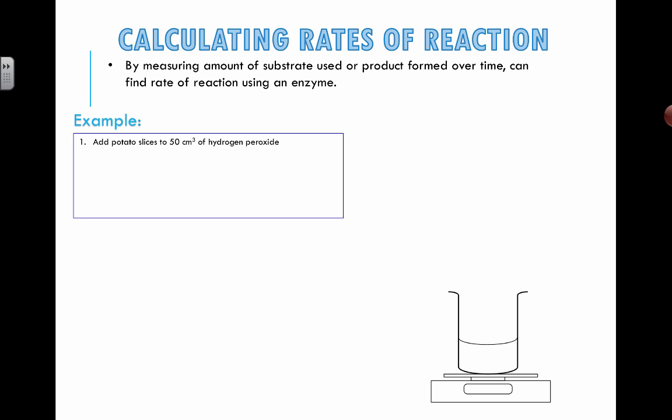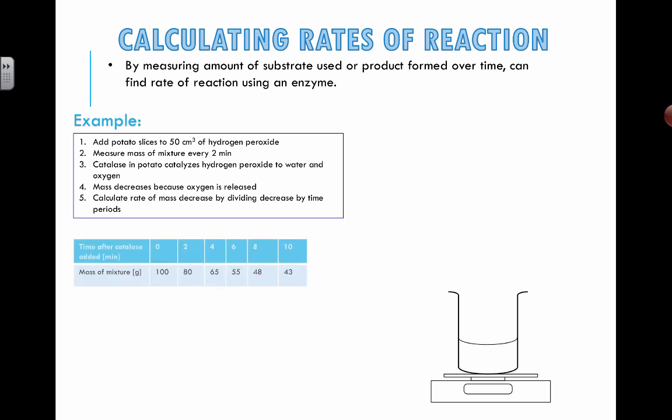In this particular example we're going to look at one of the most famous experiments using catalase from potatoes and hydrogen peroxide. The catalase enzyme helps to catalyze the breakdown of hydrogen peroxide to water and oxygen. In this case we're not going to measure the disappearance of hydrogen peroxide, we're going to measure the appearance of one of the products: oxygen.